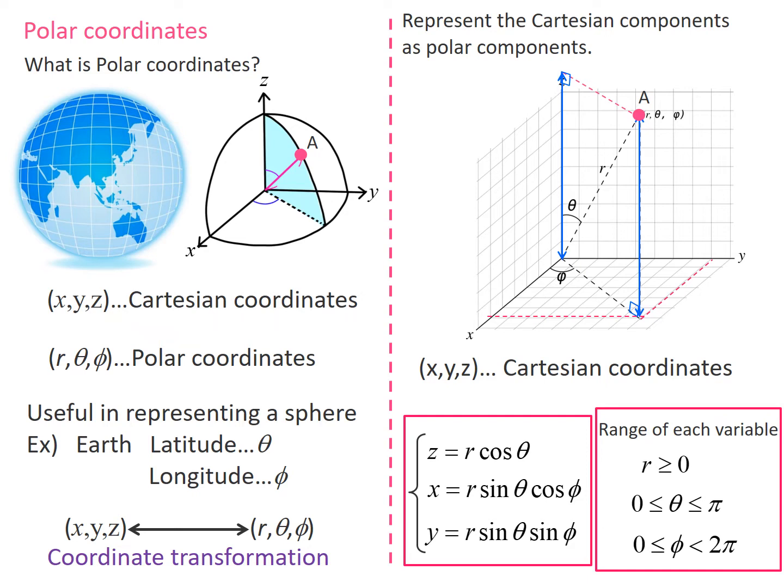On the other hand, the polar coordinates take different coordinates from the Cartesian coordinates. In the polar coordinate system, r, theta, and phi are commonly used parameters.